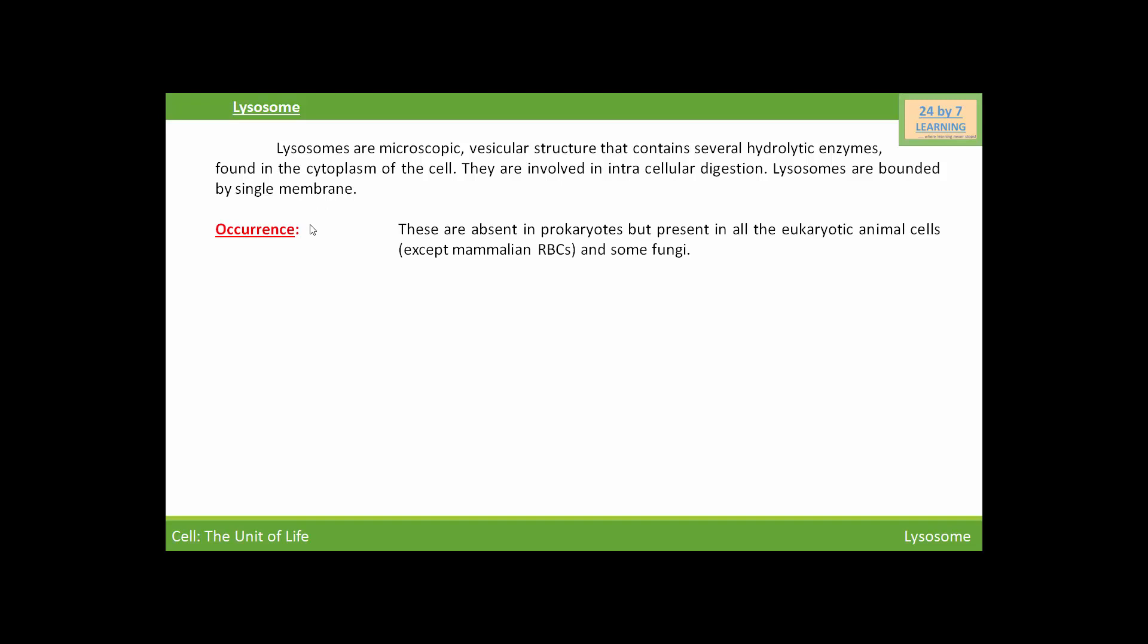Next, we discuss occurrence of the lysosome, where lysosomes are found. Lysosomes are absent in prokaryotes but present in all eukaryotic animal cells except mammalian RBC and some fungus. Lysosomes are not found in plant cells.